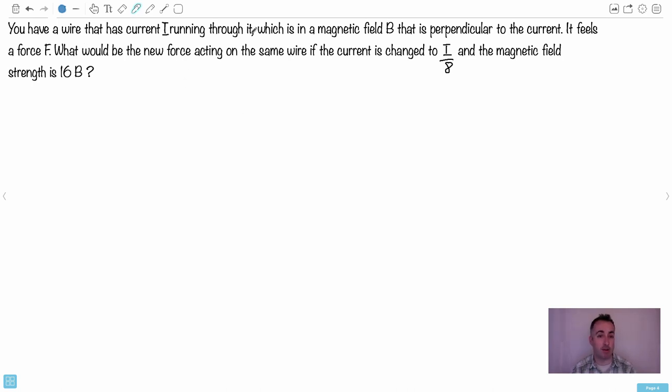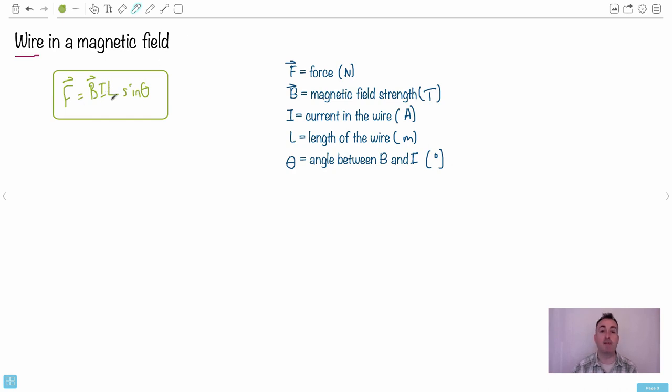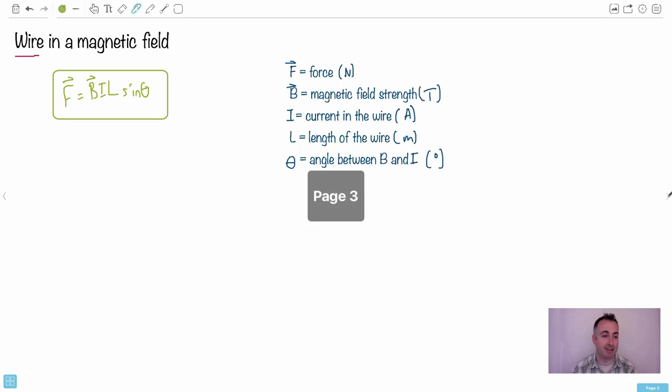We have a wire that has a current I running through it, which is in a magnetic field B that is perpendicular to the current. What does perpendicular mean? I hope you know that theta equals 90. That's going to be the key here. So it feels a force F. So right away, before starting anything else, I usually just like to write an equation for F. So F equals, now we have a wire with current running through it. So can you see we would use this equation for a wire, which is BIL sine theta. One of my students was like, oh yeah, that's Bill. And this one you just call it QVB.